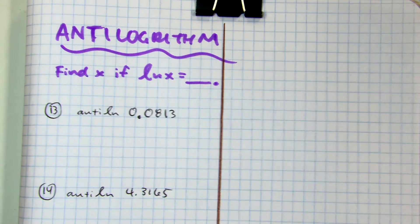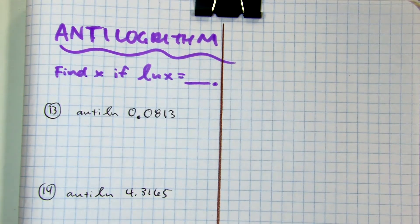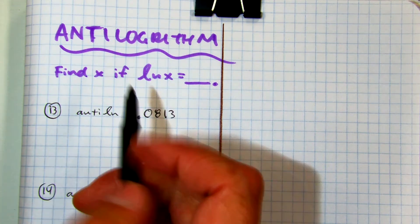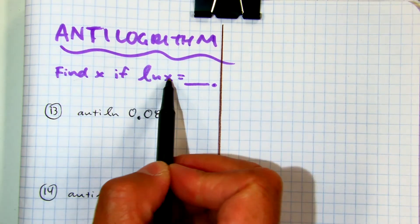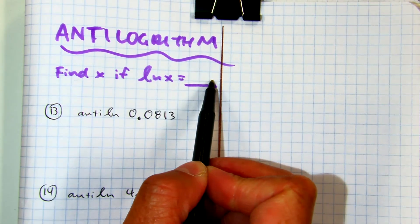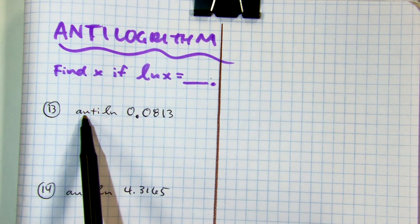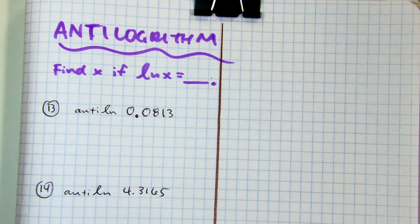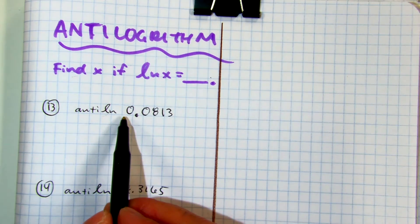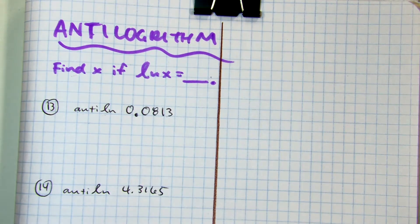All right, so an anti-logarithm is basically doing the opposite of what you just did. You're basically solving for the natural log of something equals the number we're given. So you're going to see the word anti natural log 0.0813. This is our example.